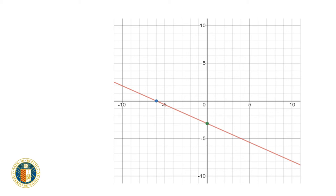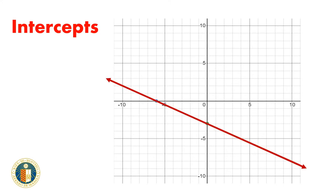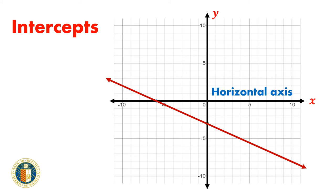To determine the intercepts of a line, we need to determine where the line crosses the x-axis, or the horizontal axis, and where the line crosses the y-axis, or the vertical axis.